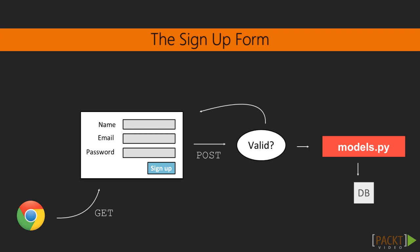Fourth, in routes.py, a function will check whether the submitted data is valid. This means checking whether all fields are filled out, whether the email looks like a real email address, and whether the password is longer than 6 characters.